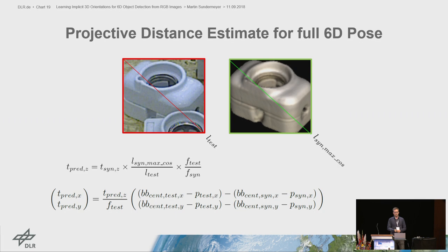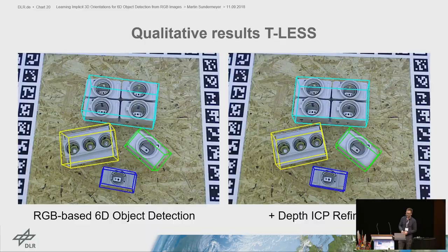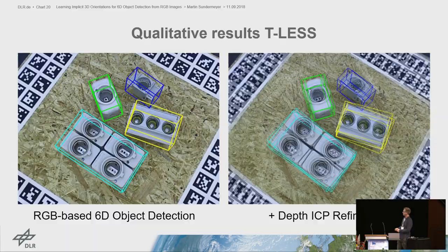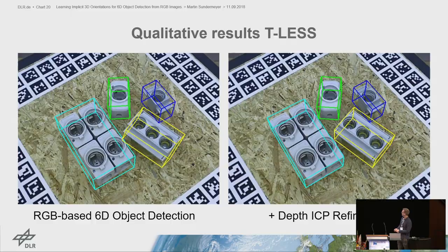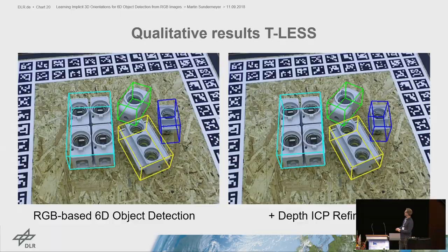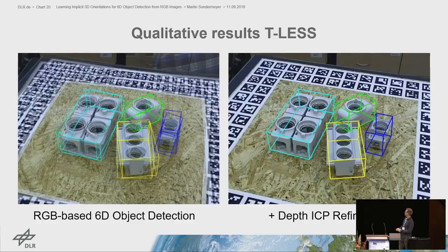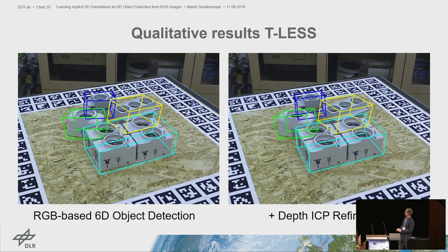Here are some qualitative results on TLS. On the left you can see our RGB-based 6D object detection; on the right, the same with an ICP refinement step. There is not a big visual difference, and it is flickering a bit because there is no tracking involved. Notice that sometimes the ICP actually worsens the results when there is occlusion.